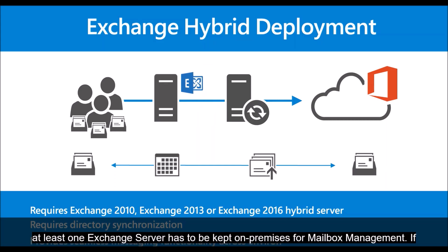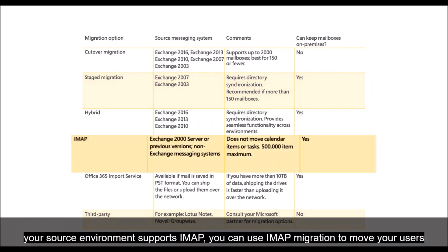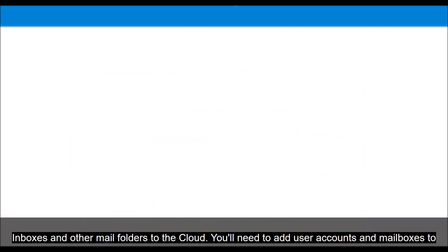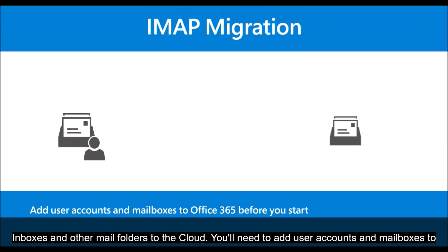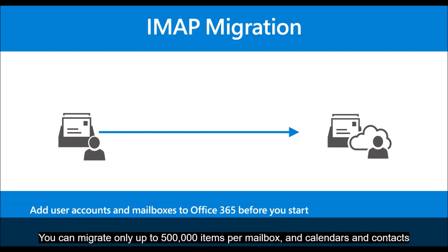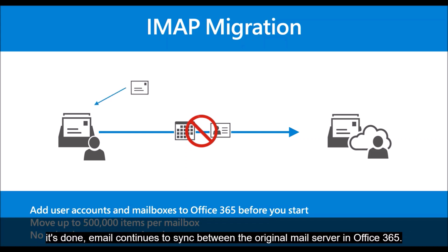If your source environment supports IMAP, you can use IMAP migration to move your users' inboxes and other mail folders to the cloud. You'll need to add user accounts and mailboxes to Office 365 before you use this option. There are limitations: you can migrate only up to 500,000 items per mailbox, and calendars and contacts will be left behind. But you can migrate mailboxes in batches, and until you say it's done, email continues to sync between the original mail server and Office 365.